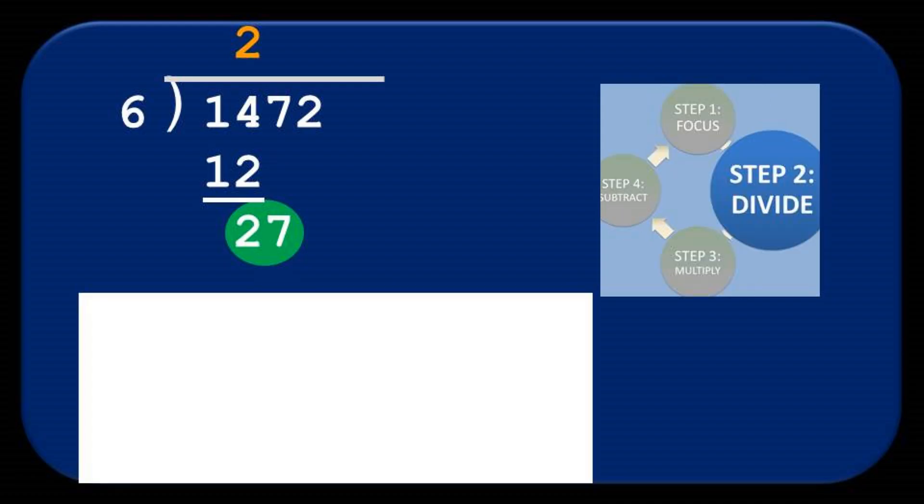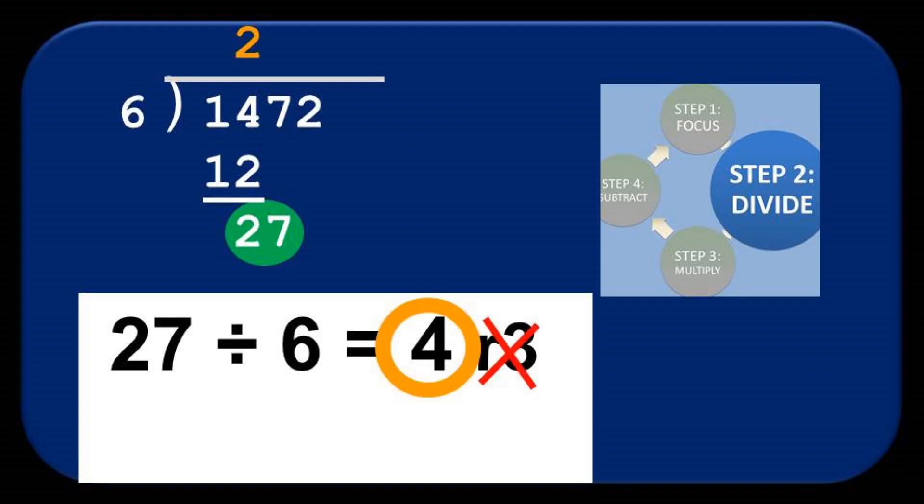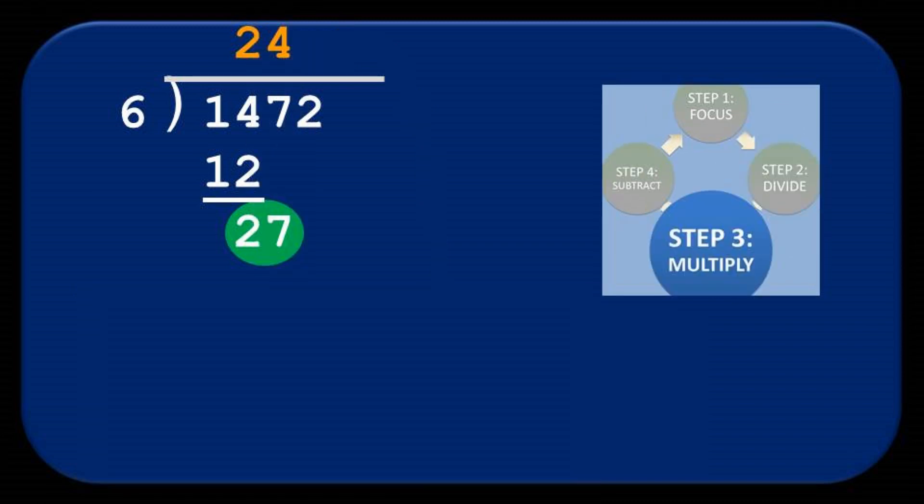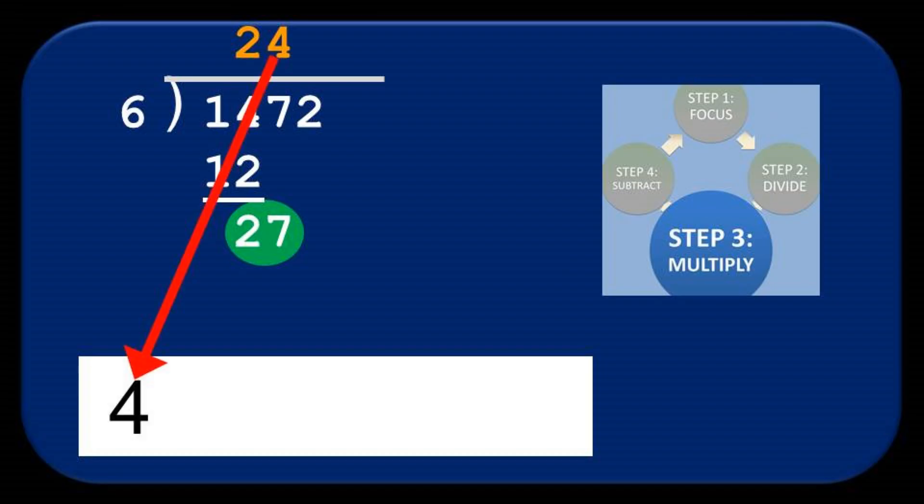Again, we take the focus and divide it by the divisor. 27 divided by 6, which equals 4. And again, we ignore the remainder. We write this digit on top of the rooftop, carefully lined up over the focus, and multiply it by the divisor.